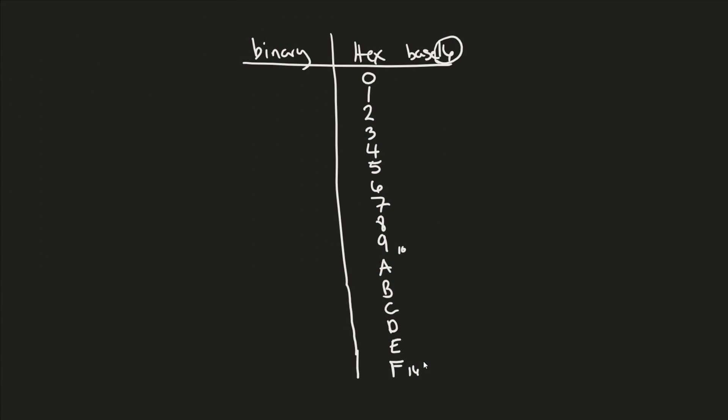In binary form, zero is represented by four zeros: 0000. To represent one, we put 0001. For two, we do 0010. Notice what's happening — the least significant bit becomes a one for the value one, and then we move that one up and zero out the last bit for two. For three, it's 0011, using both of those slots.